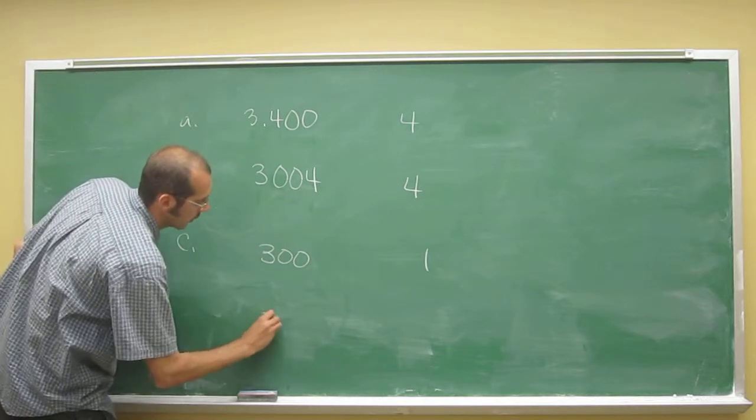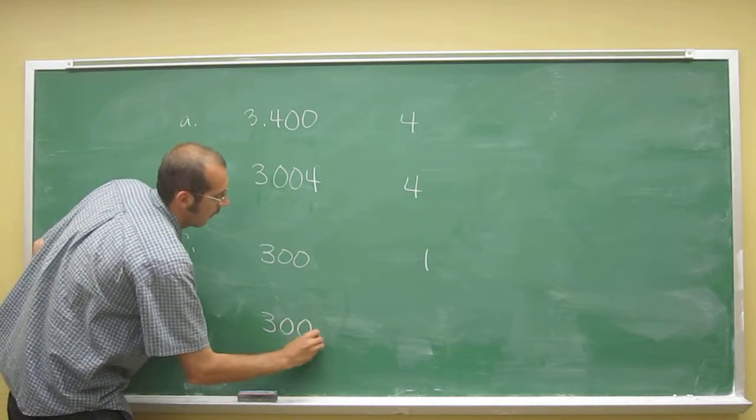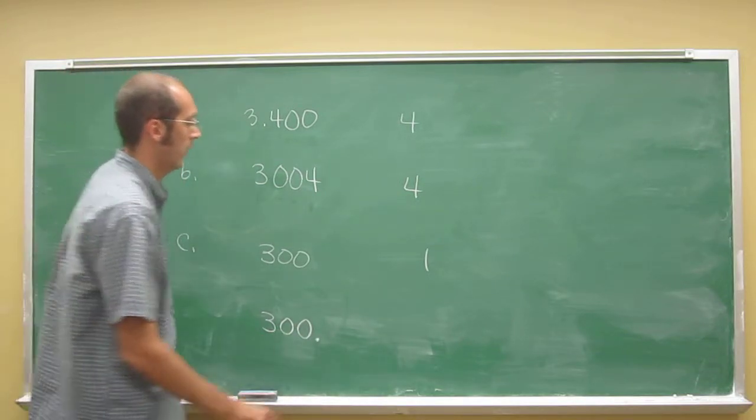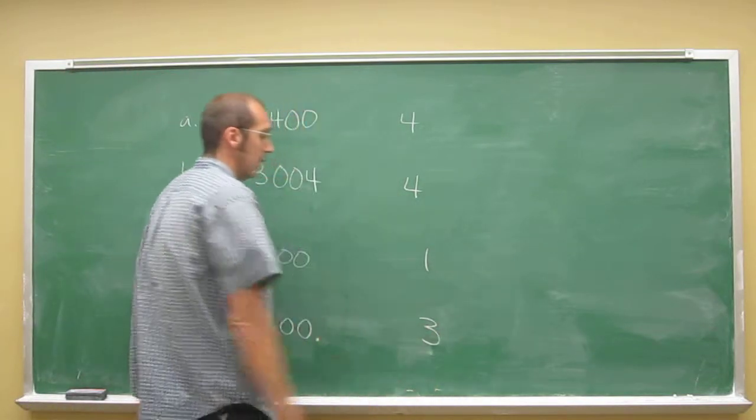So in other words, if we did something like this, 300 decimal point, that would actually have three significant digits.